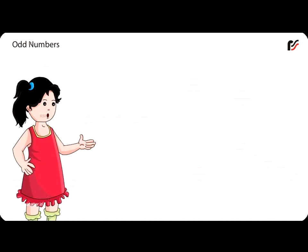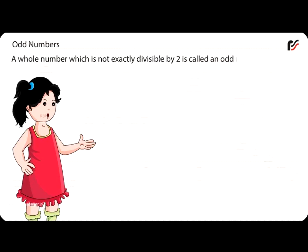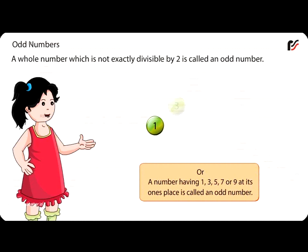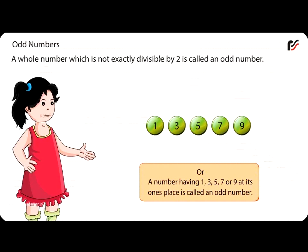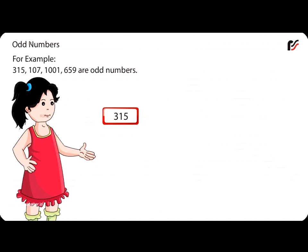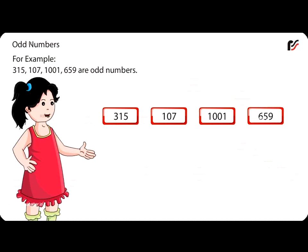Odd Numbers: A whole number which is not exactly divisible by 2 is called an odd number. Or, a number having 1, 3, 5, 7 or 9 at its 1's place is called an odd number. For example, 315, 107, 1001, and 659 are odd numbers.